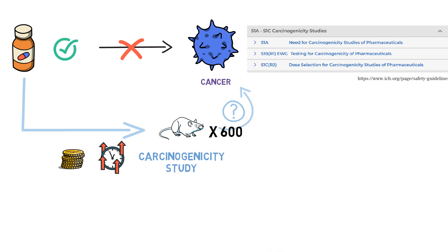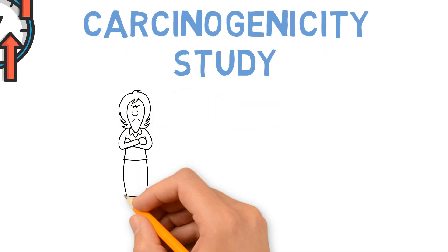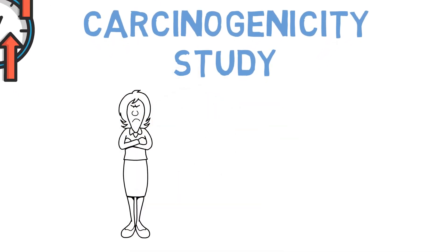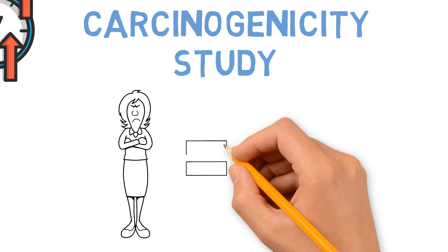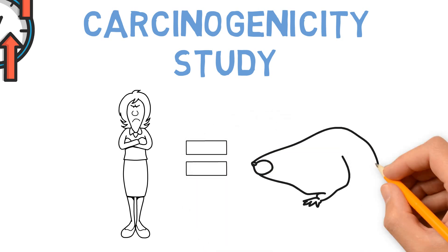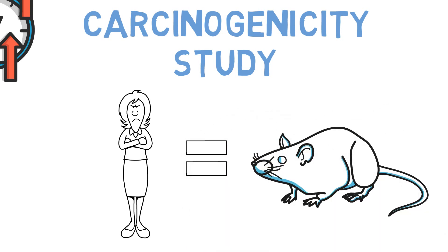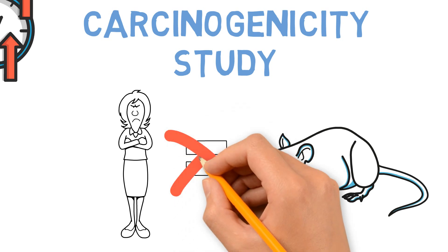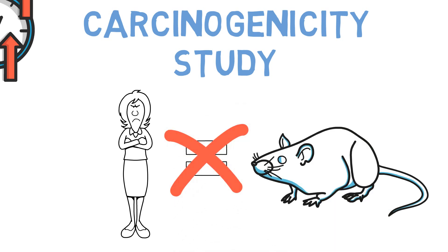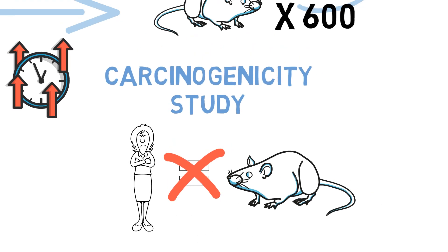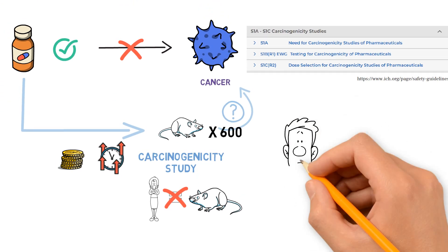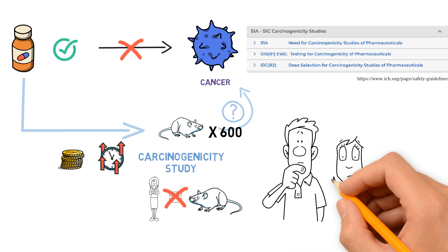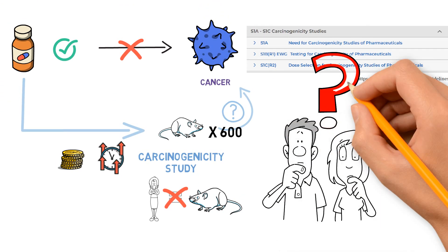Such a study is not only time-consuming and expensive, but also requires around 600 animals per drug, which raises many ethical concerns. Data also suggest that studies in rodents may not be the best way to predict what will happen in humans — after all, a person is not a big rat. These are different species, so findings in rodents may not necessarily represent what we would expect for humans.